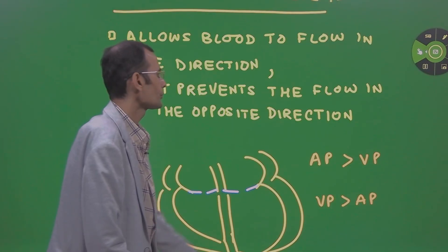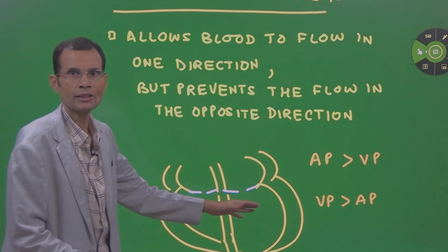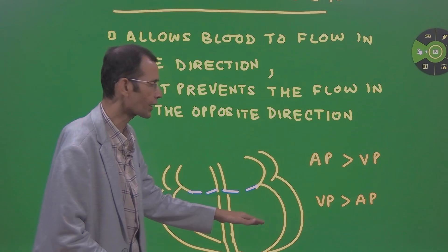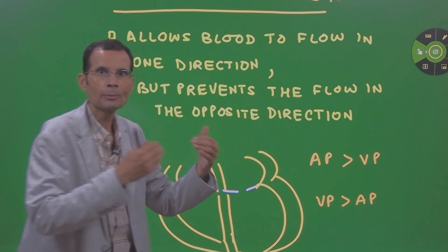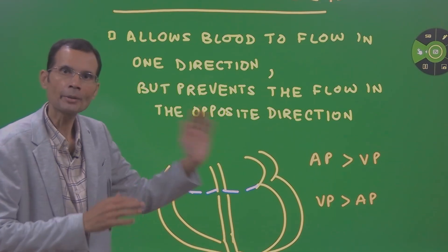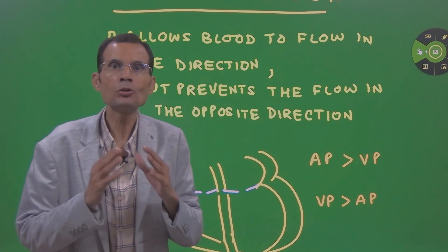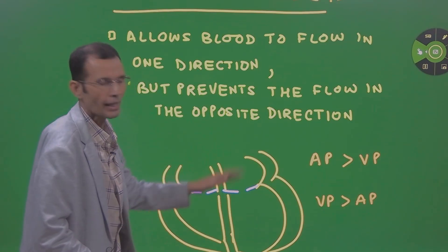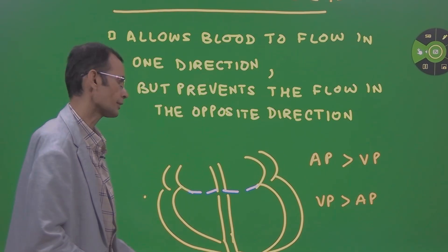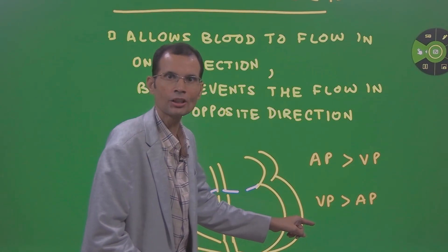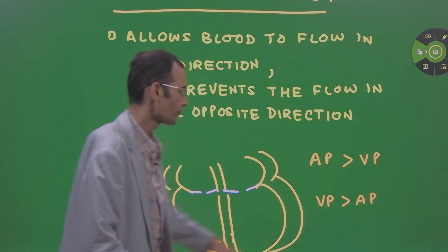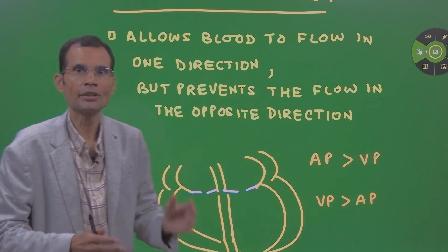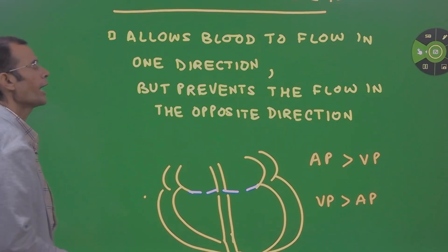Let us take an example — AV valves in the heart. When the atrial pressure is greater than the ventricular pressure, the AV valves will be open and the blood will flow from atria to ventricles. After all, blood flows from high to low pressure. But as long as the ventricular pressure is more than the atrial pressure, the AV valves will remain closed so as to prevent the blood going back into the atria. That is the function of these valves in the heart.